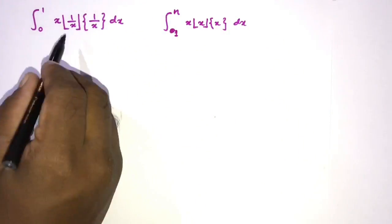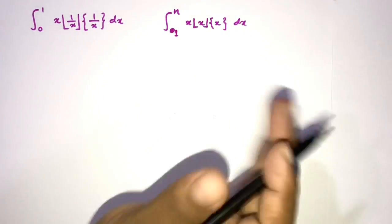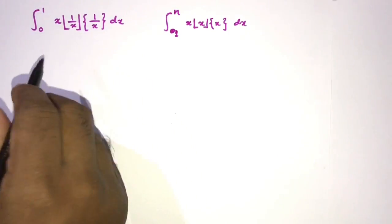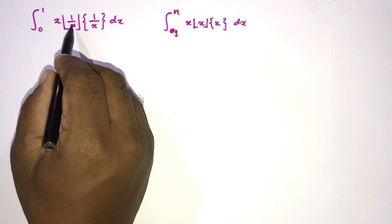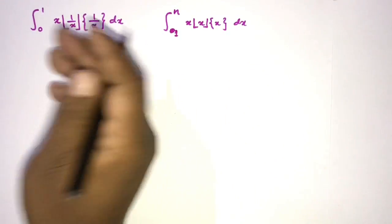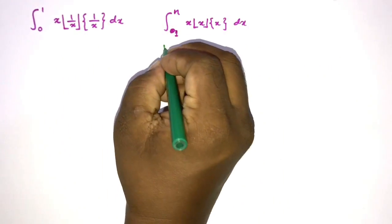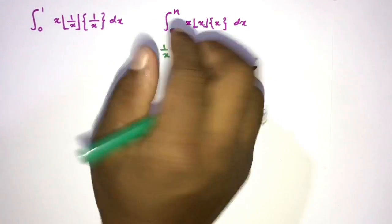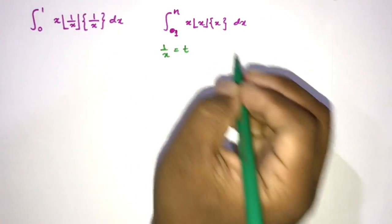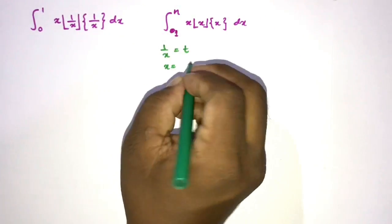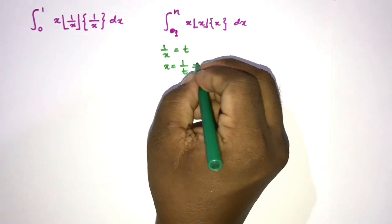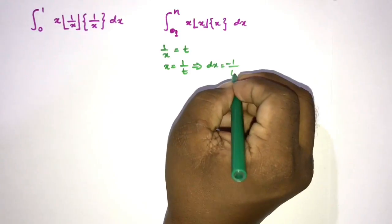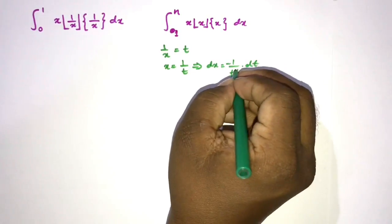Now, how do we evaluate this integral? We can apply a substitution. The substitution is 1/x = t. Then x = 1/t, and differentiating gives dx = -1/t² dt.